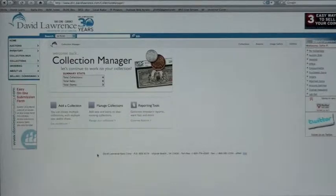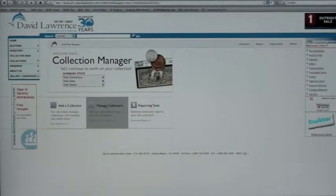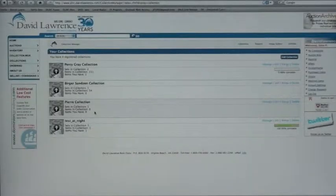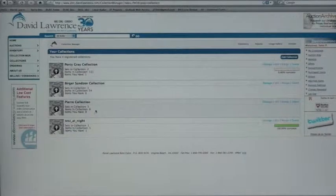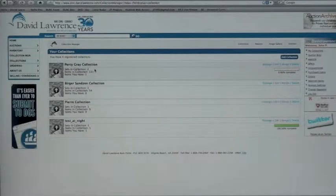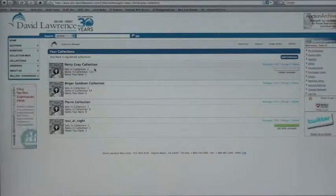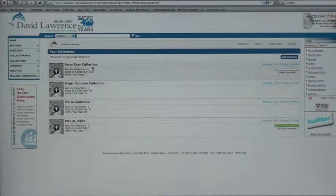For starters, the software is basically engineered along three different levels. The first biggest level is you build collections, and you can have multiple collections within your database. For example, if you have three children, you can have child A, child B, child C's collection.